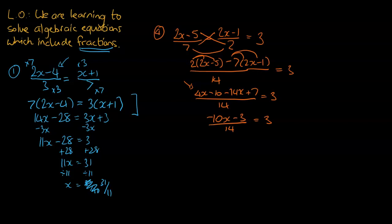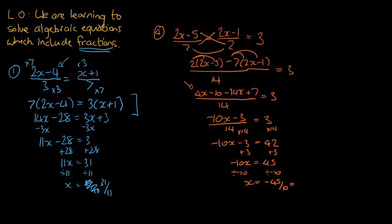From here, that looks pretty similar to the first and second examples. So let's just get rid of the divide by 14 by doing times 14 to both sides. So negative 10x minus 3 equals 42. Then plus 3 on both sides gives negative 10x equals 45. Divide by negative 10 on both sides, so x equals negative 45 over 10. If you simplify that fraction — they have a 5 in common — so it's going to be negative 9 over 2. A few of us may be tempted to write that as negative 4.5, that's fine, but I do prefer fractions in our answer.